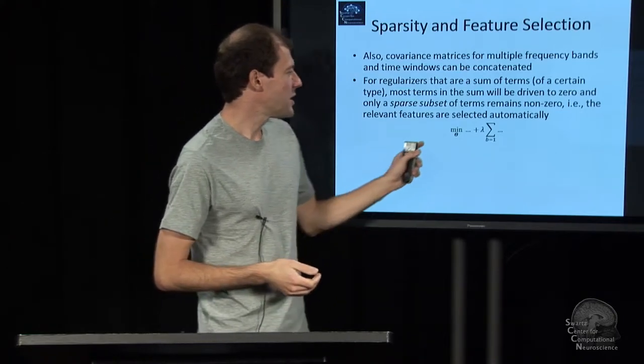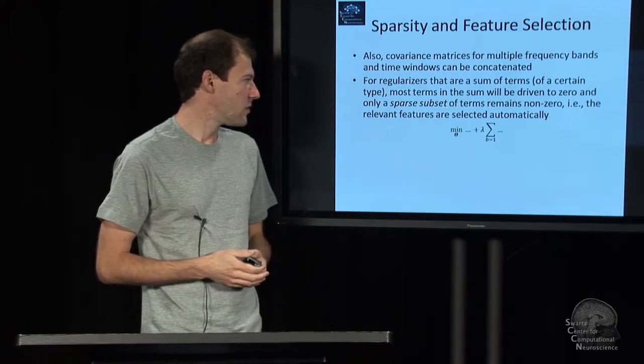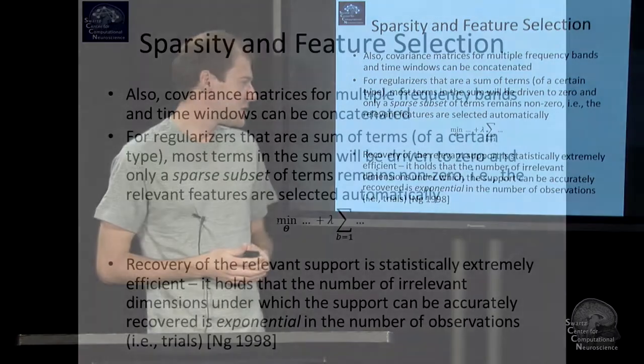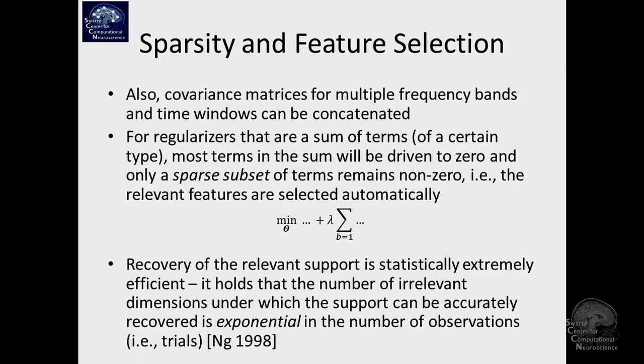If you are having a term like that, and say we're calling these things features, there is a bunch of statistical guarantees that have been derived for the first time in 98 by Andrew Ng, which says that finding which ones of all these possible features are relevant, are non-zero, and which ones are zero,